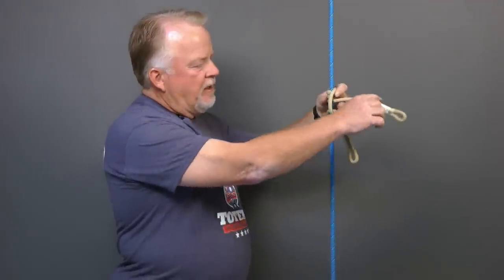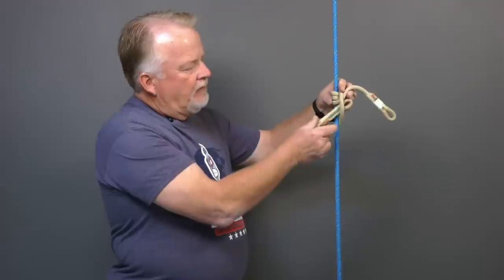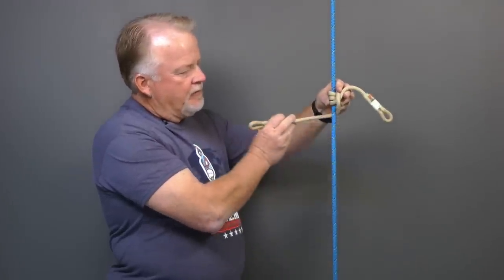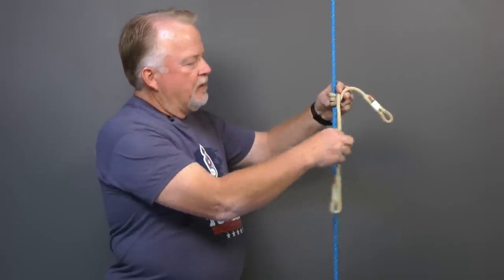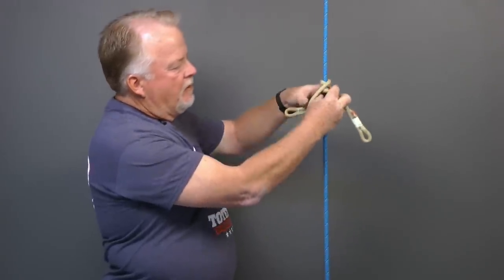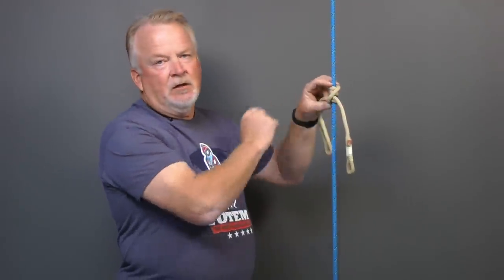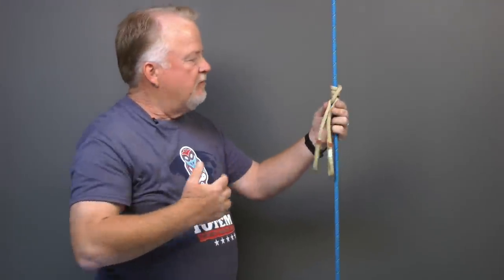There's another variation of an asymmetric prusik, though. And the only difference is, instead of this last piece coming around this direction, it comes around this direction and finishes here. When you set it and look at the bottom, it looks like a clove hitch. Both of them work fine. Some people have a preference for one over the other. And there's some applications where one actually works a little better than the other. Just practice both and see which ones you like.